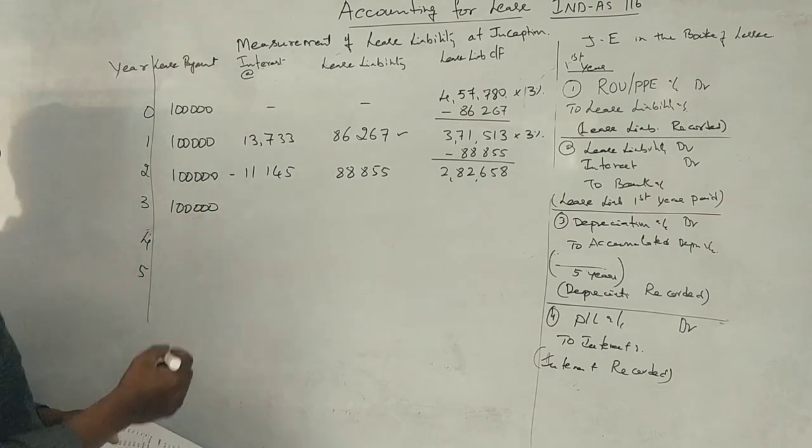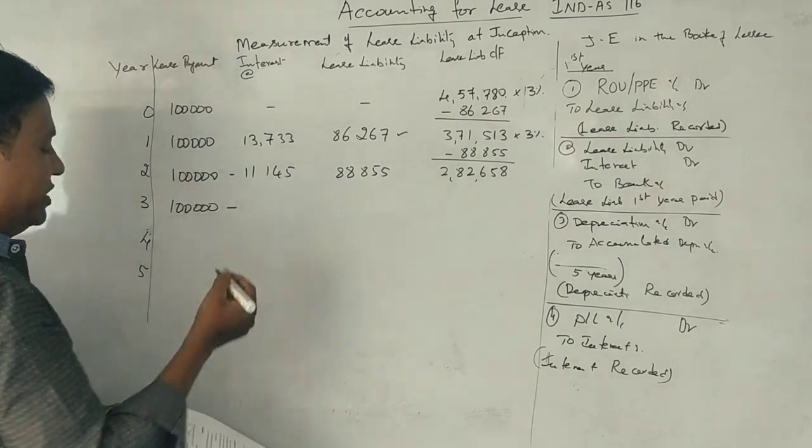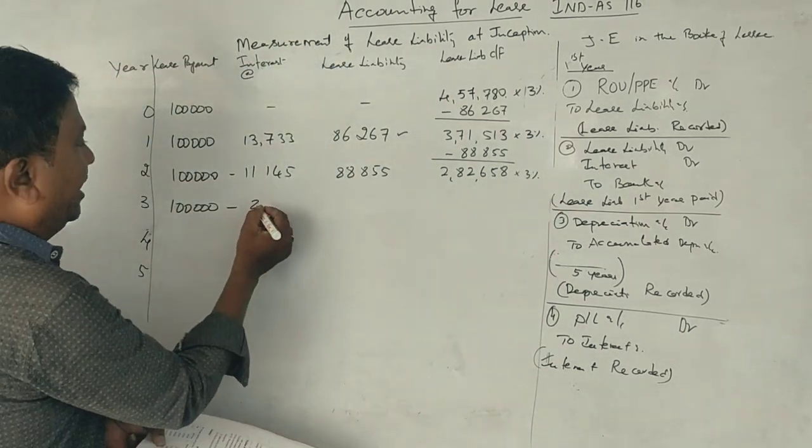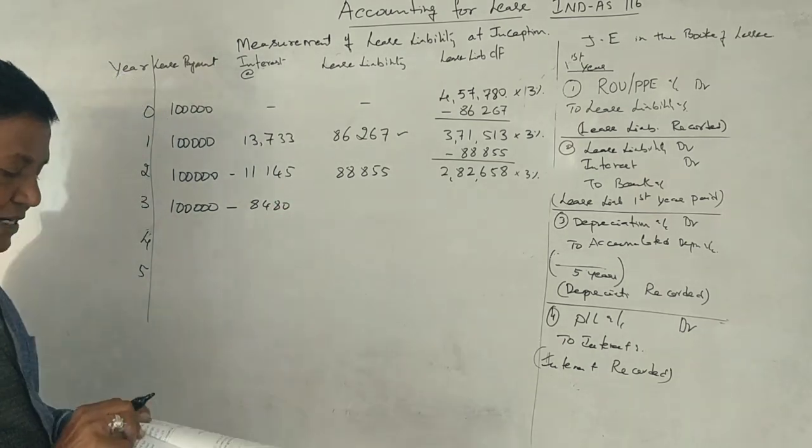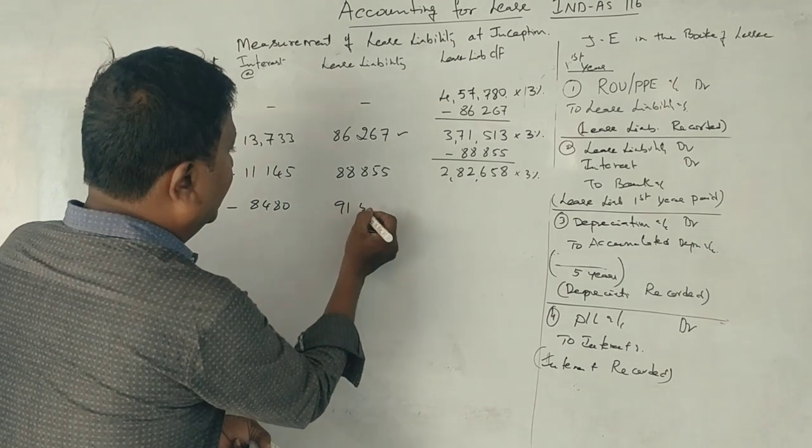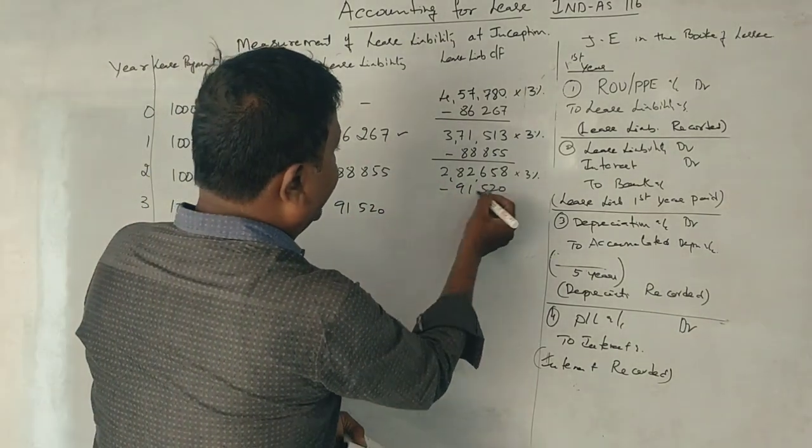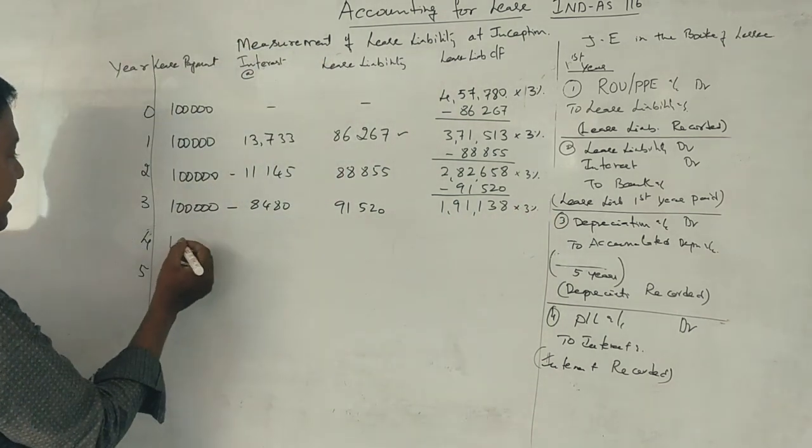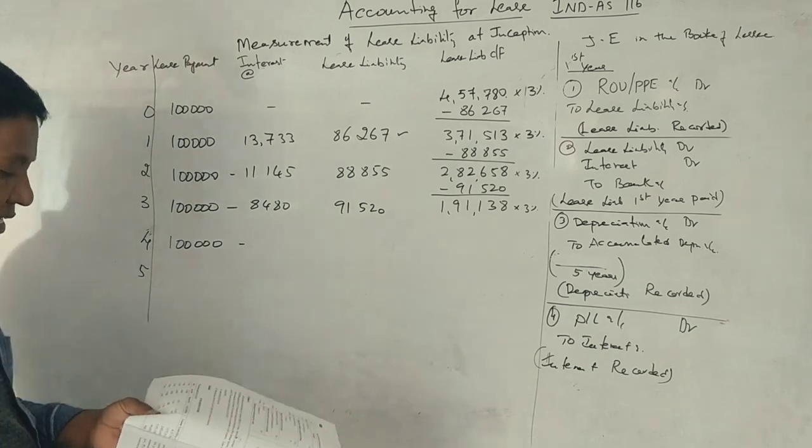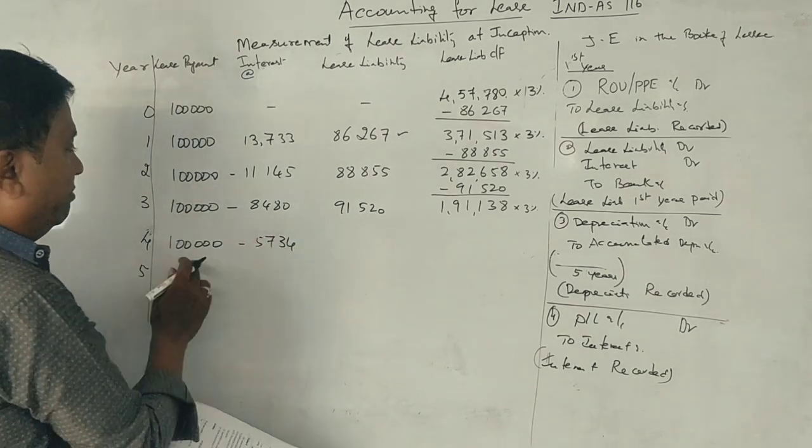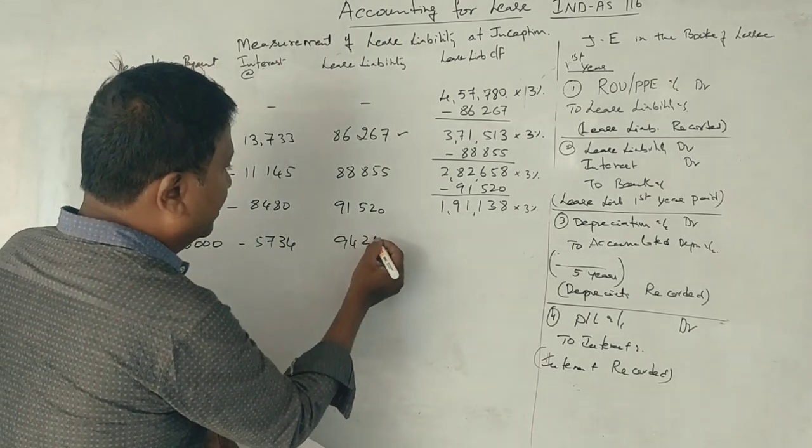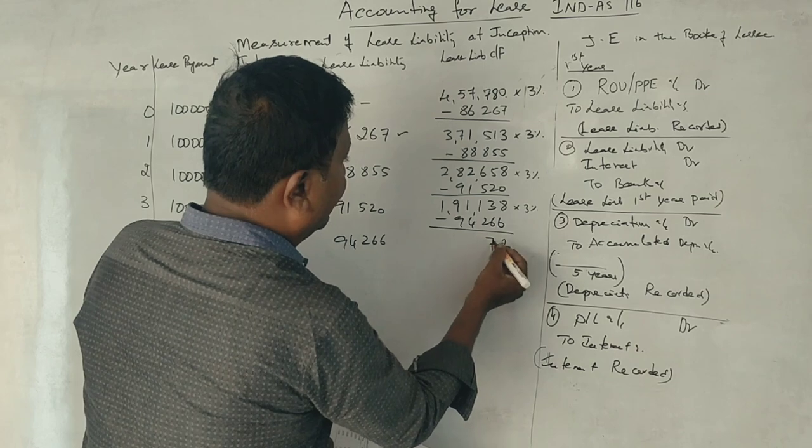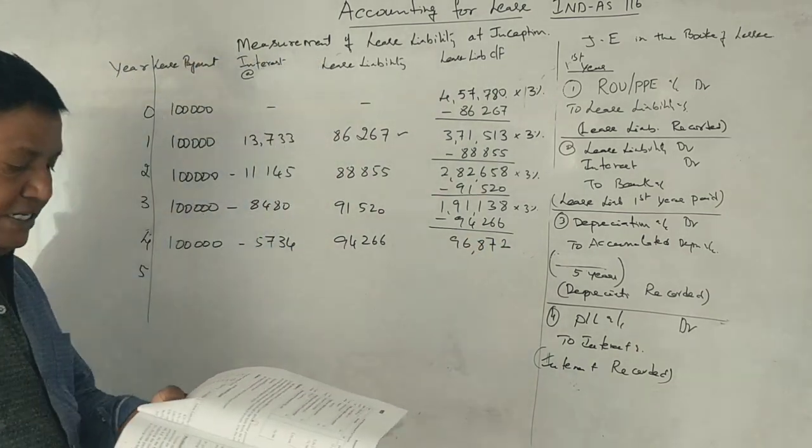The third year is 1,00,000 payment at the end of the year. The third year 3% interest is 8,480 Rs. Lease liability is 91,520. The third year total is 1,91,138 Rs. Minus 94,266 equals 96,872 Rs.